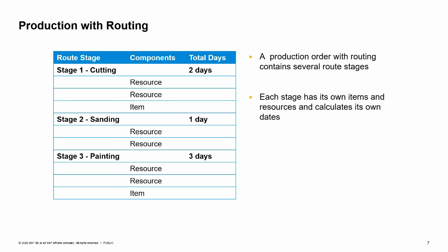Like every other bill of materials, a bill of materials with routing is copied to a production order. Then, each stage in the production order can be separately issued, transferred, or received from production.